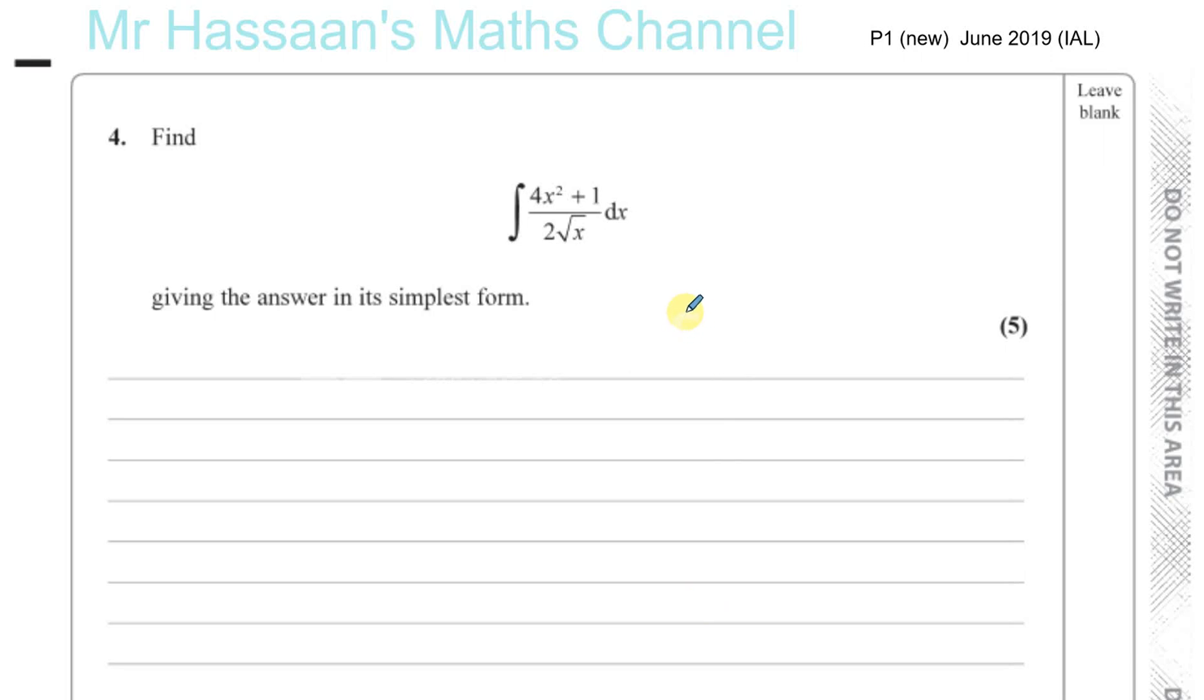And now for question number 4 from the P1, June 2019, International A-Level, an Excel paper. Here we have a question on integration, and we've got to integrate this expression with respect to x. Now when you have an expression like this, in order for you to integrate it, you need to prepare it for integration.